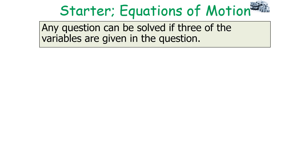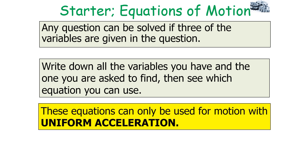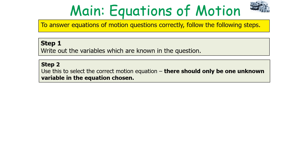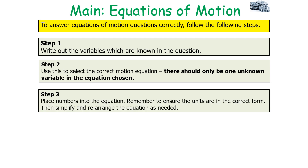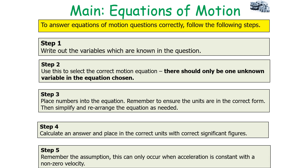Any equation can be solved if three of the variables are given in the question. You should write down all the variables you have and the one you are asked to find, then select which equation to use. Remember, these equations can only be used for motion with uniform acceleration. To answer questions correctly, follow these steps: first, write out the known variables; second, select the correct motion equation with only one unknown; third, place the numbers into the equation, ensure units are correct, then simplify and rearrange as needed; fourth, calculate the answer with correct units and significant figures.